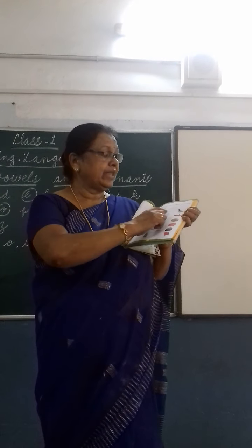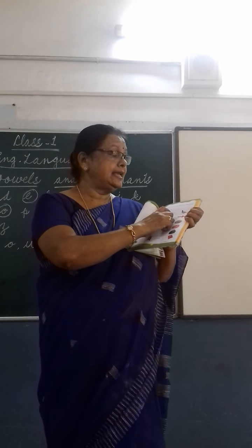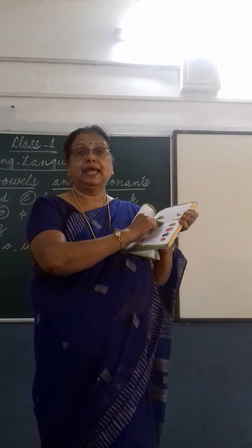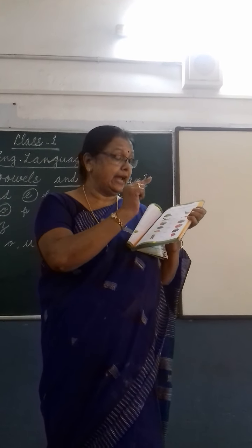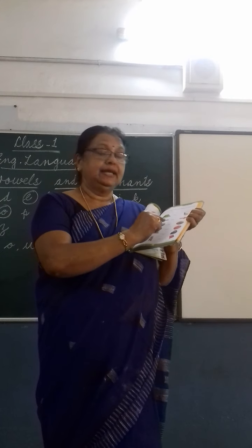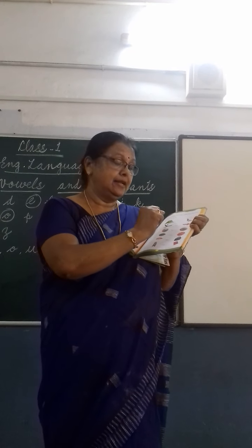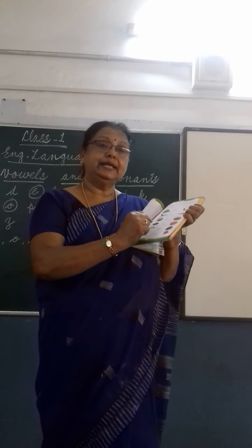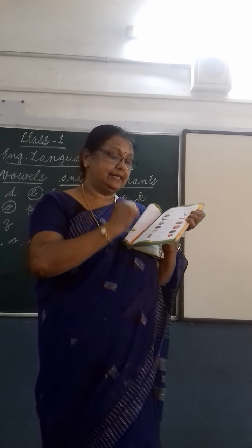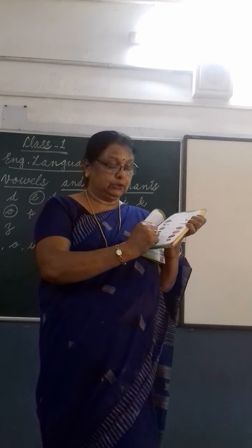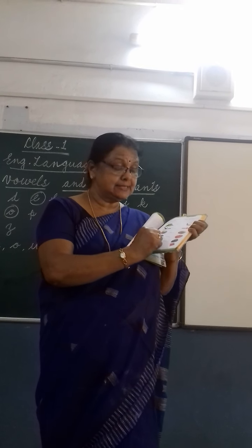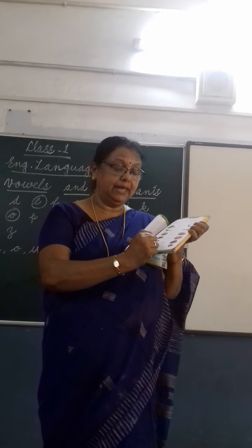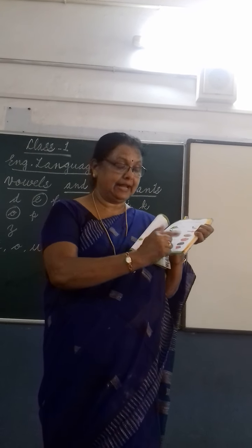Duck — D is a consonant, write C. Arrow — A is a vowel, write V. T is a consonant, write C. And import — I is a vowel, write V. And book — B is a consonant, write C.